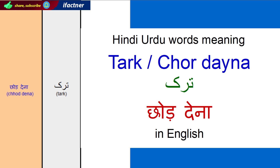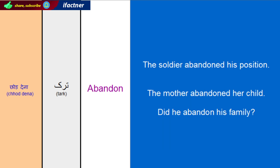The word chhoddena or Tarkh kardena means Abandon in English. So if we want to say he abandoned his children or he abandoned his position, then we can use the words Tarkh kardia, Tarkh kardena, or chhoddena, or chhoddia.